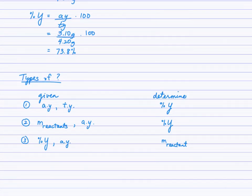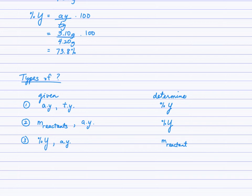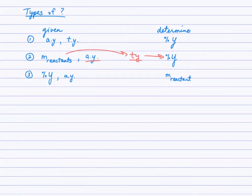To summarize the types of questions: in example one, you were given actual yield and theoretical yield and asked to determine percent yield. In example two, you weren't given the theoretical yield but were given the masses of the reactants, so you determined the limiting reagent and in turn the theoretical yield. A third type of question — perhaps the trickiest — is when you're given the percent yield and the actual yield and asked to find the mass of the reactant.